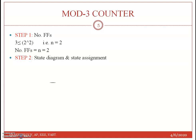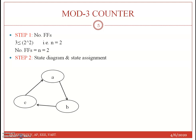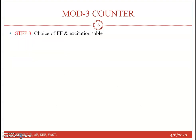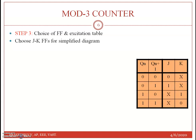The second step is the state diagram and state assignment. We have 3 states: A, B, C, assigned as 00, 01, 10 respectively. The third step is to choose a flip-flop type. We will use JK flip-flops. The corresponding excitation table will be formed using the JK flip-flop excitation values for each state transition.